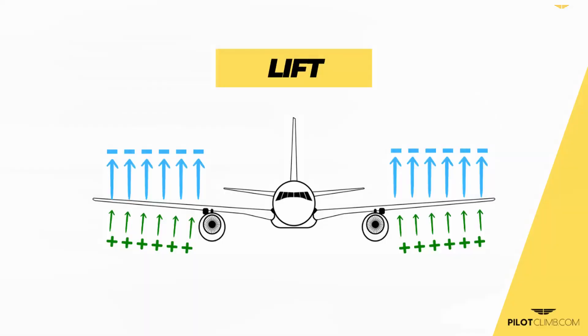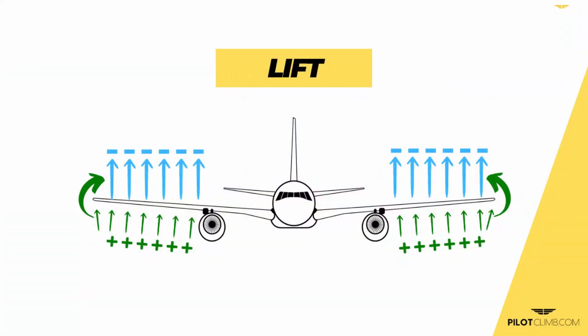Lift on a wing is created by high pressure located on the lower part of the wing and low pressure located on the upper part of the wing. This high and low pressure around the wing creates lift, and the lift makes sure that the aircraft keeps flying. However, nature tends to equalize differences in pressure, so at the end of the wings this differential pressure tries to equalize.